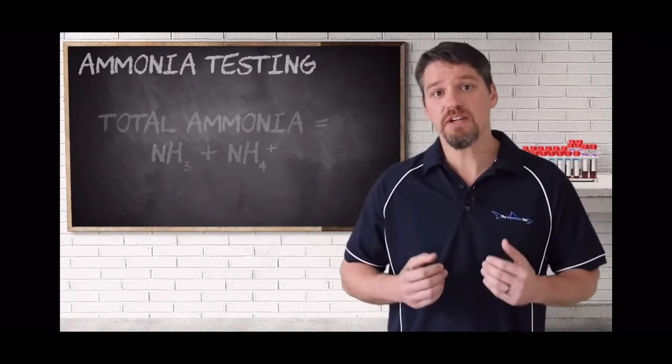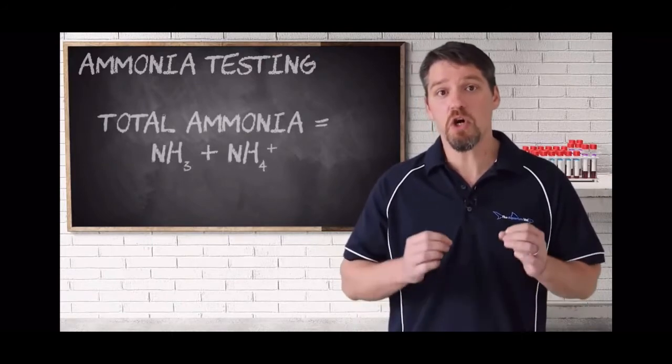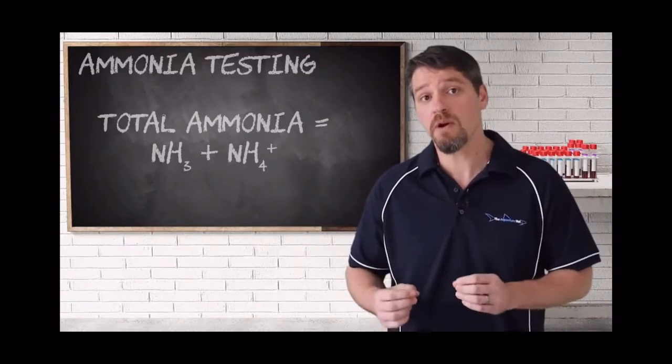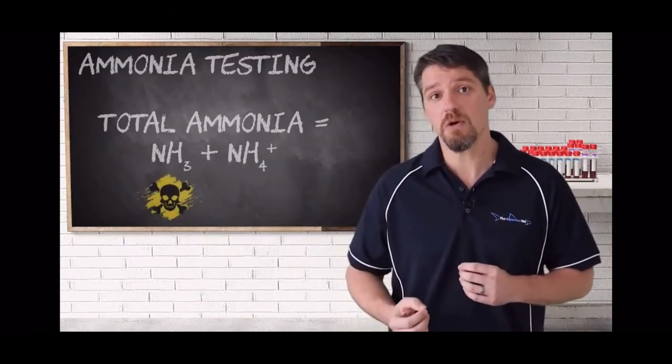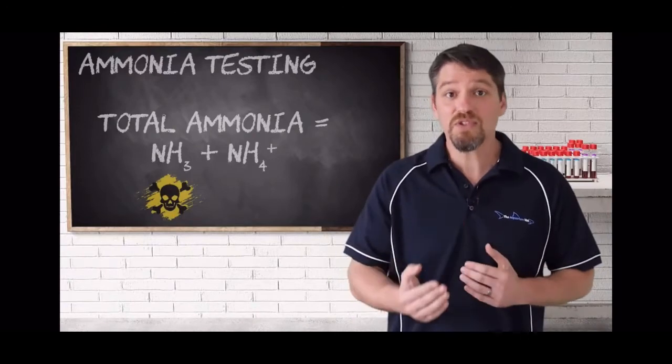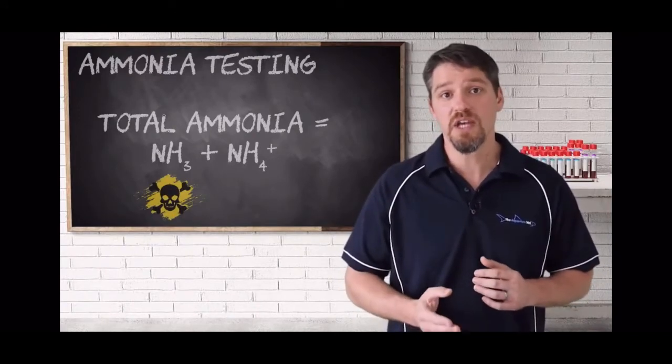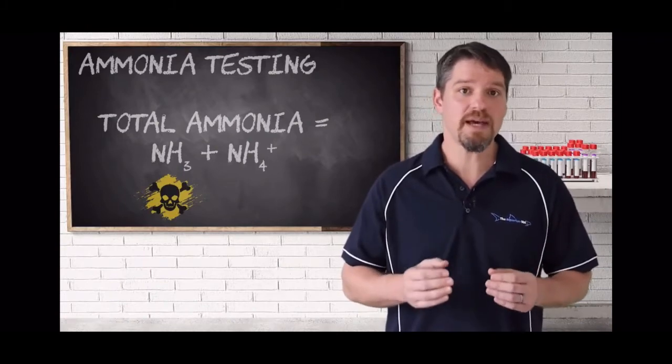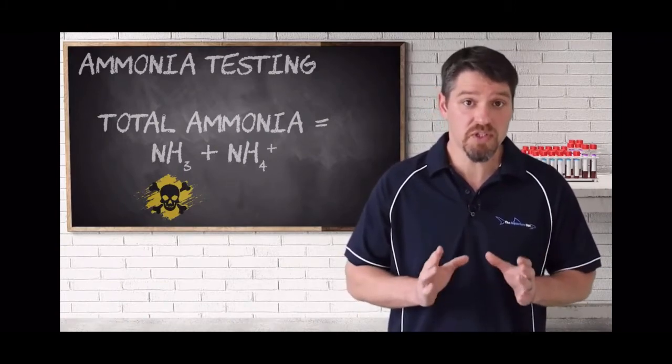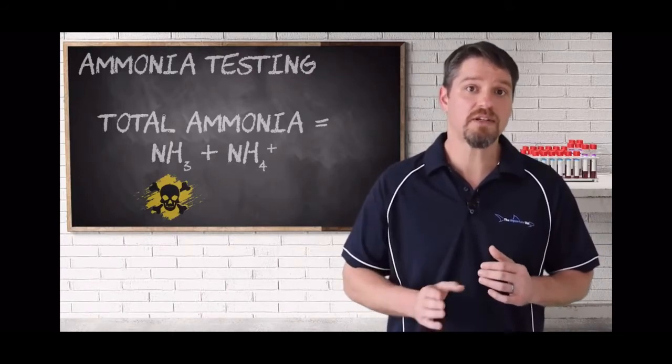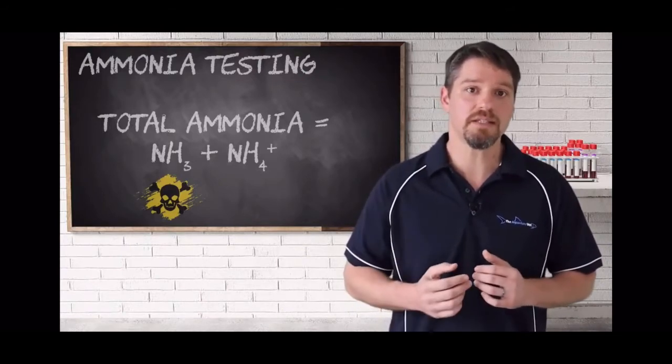The vast majority of test kits actually measure the total ammonia, and so this includes both the non-toxic ammonium or NH4+ and the toxic ammonia or NH3. And as a result, these tests will require a little bit more interpretation of the results in order to calculate the actual amount of toxic ammonia, which is what we're concerned about, that's actually present. And we will cover how exactly to do that in some examples later in this lesson.